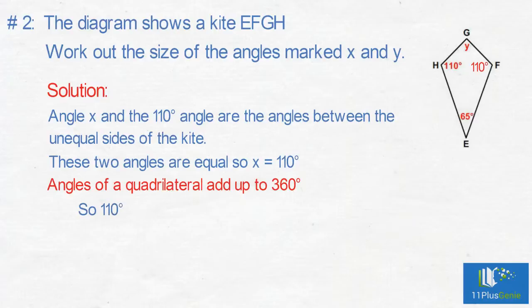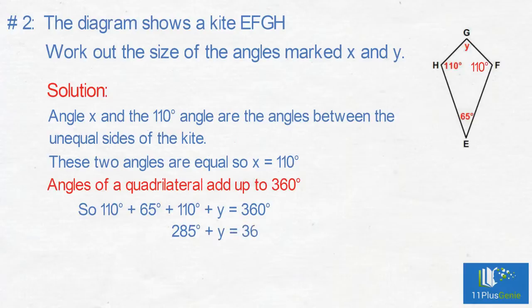So 110 degrees plus 65 degrees plus 110 degrees plus Y equals 360 degrees. Simplifying: 285 degrees plus Y equals 360 degrees, so Y equals 360 minus 285, which equals 75 degrees.